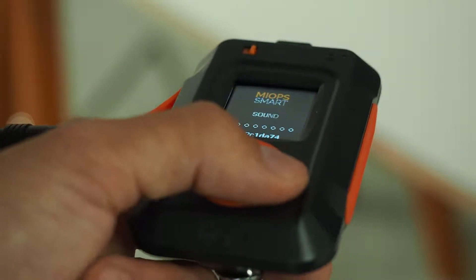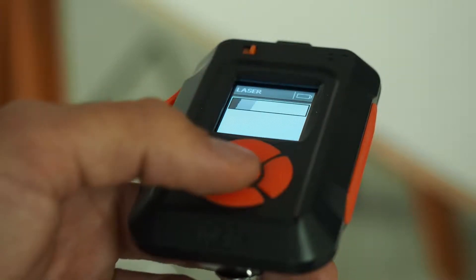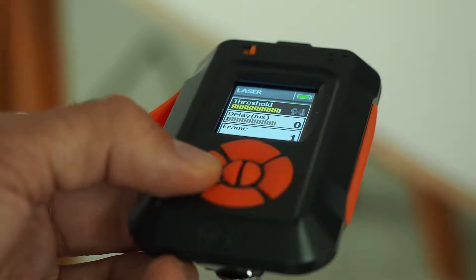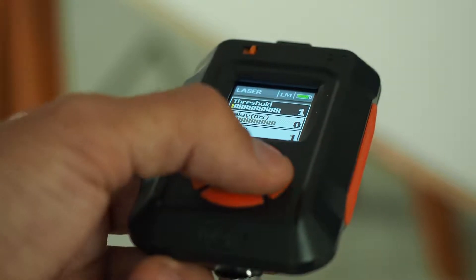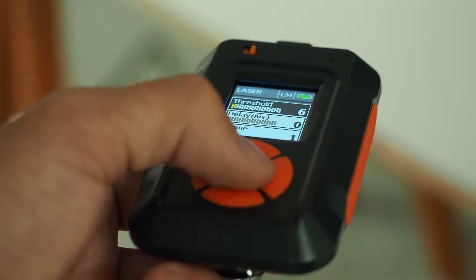The MIOPS is very easy to use. We just turn it on, go into the laser mode and here we need to set the threshold, which basically is the sensitivity level of the receiver. We confirm that and we are ready to go.